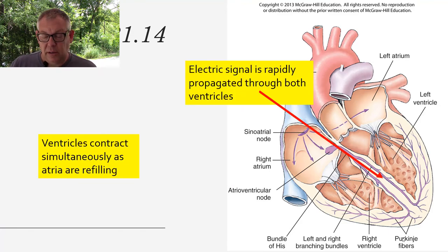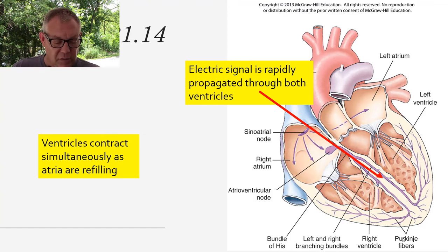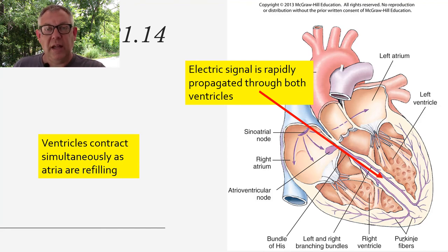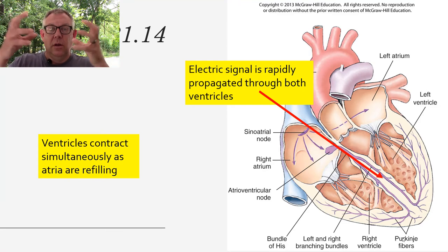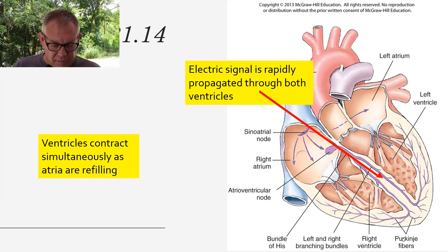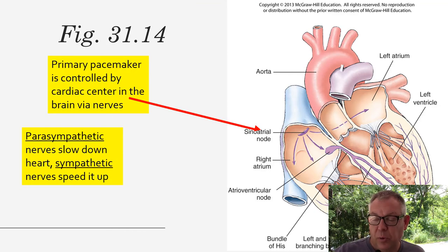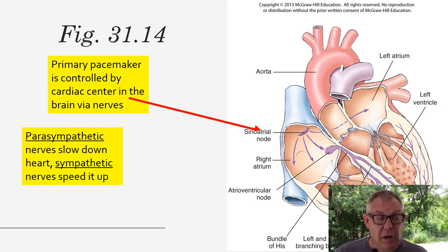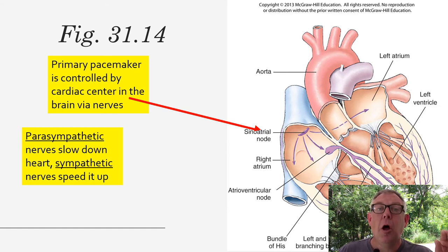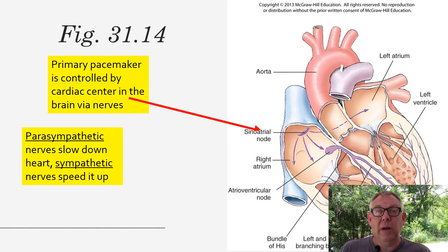This shows how these cells can rapidly propagate the signal so that all the cardiac muscle in the ventricles contracts at the same time. The ventricles fire a moment after the atria, so the ventricles contract while the atria are relaxed. This coordinates the contraction and relaxation of the atria with the ventricles. The primary pacemaker is controlled by nerves from the cardiac center in the brain, so while the muscle contractions themselves aren't directly controlled by nerves, the pacemaker cells are.